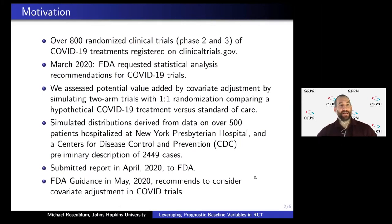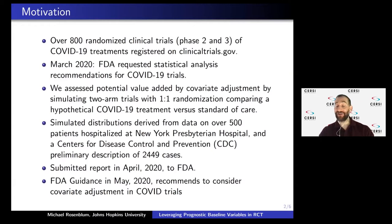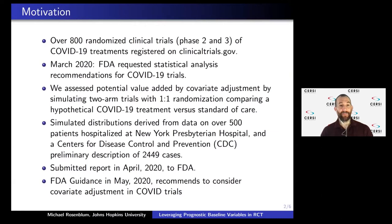The background is that there are over 800 randomized clinical trials — phase two and three — of COVID-19 treatments registered at clinicaltrials.gov. Almost a year ago in March 2020, the FDA requested statistical analysis recommendations for the onslaught of COVID-19 trials that were getting registered, and they reached out to some of the Searces to ask for advice.